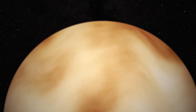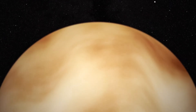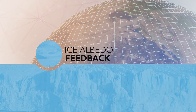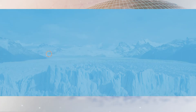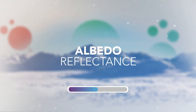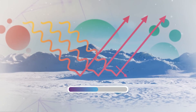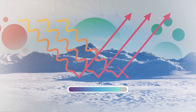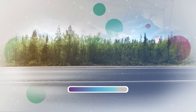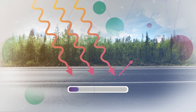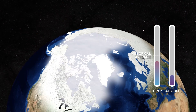Water vapor is a primary reason that Venus has a surface temperature of around 872 degrees Fahrenheit. A second example of a positive feedback is the ice albedo feedback. Albedo describes how reflective a surface is to the incoming radiation from the sun. Ice is very reflective, and so it has a high albedo. Forests and asphalt are not very reflective.